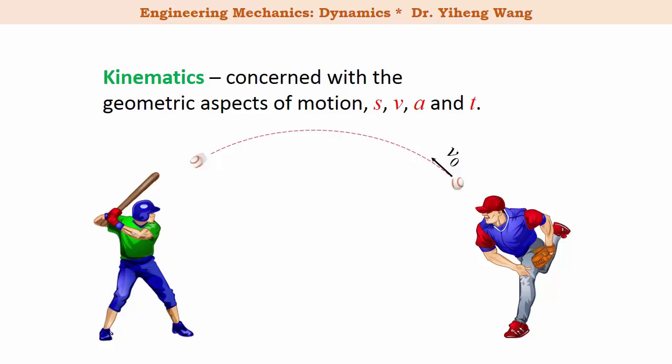An example of a kinematic problem could be to determine at what height and at what velocity the hitter should expect to hit the ball if the initial position and velocity of the ball are known. We could even predict the trajectory of the ball. Once again, we are only interested in the geometry of the motion, not the driving forces.